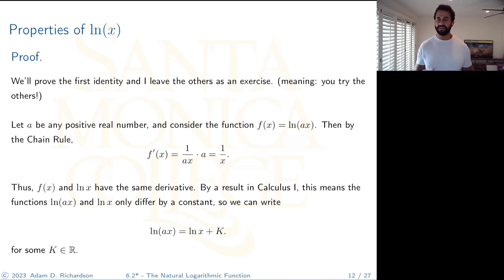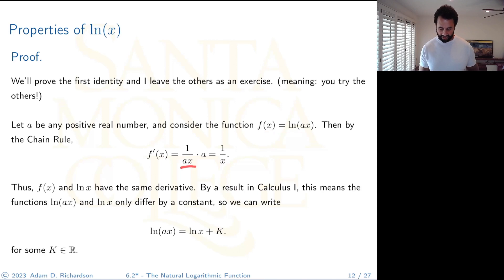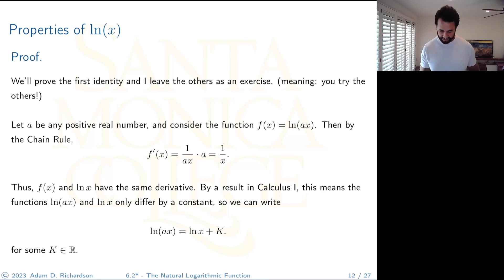To prove property 1, let a be any positive real number and consider the related function ln(ax). By the chain rule, differentiating ln(ax) gives 1/(ax) times a, which equals 1/x. So the derivative of ln(ax) is 1/x — the same as the derivative of ln(x). Two functions with the same derivative can only differ by a constant.